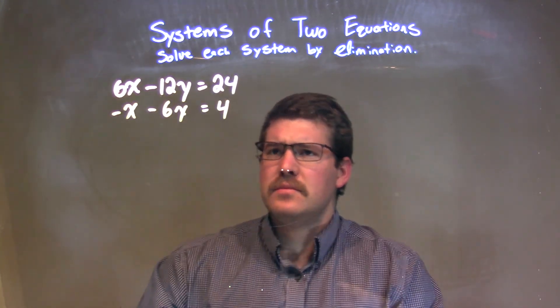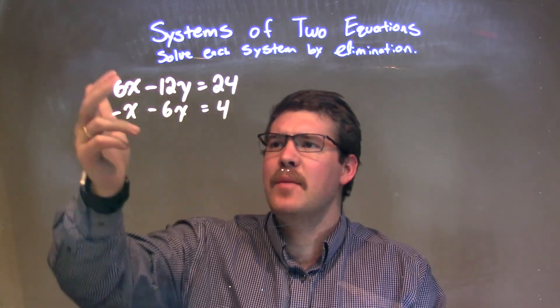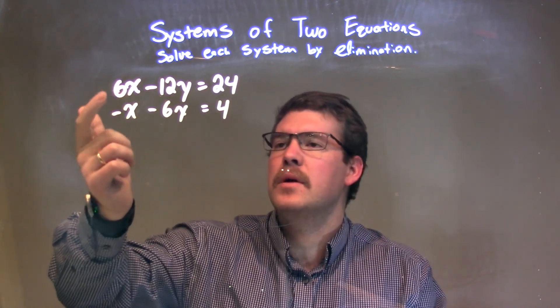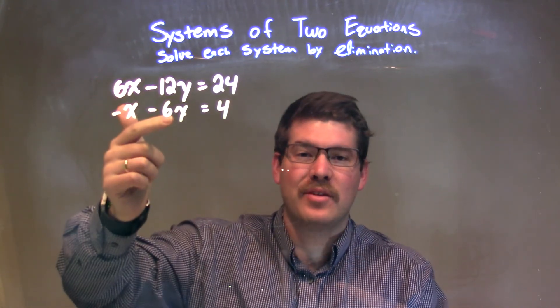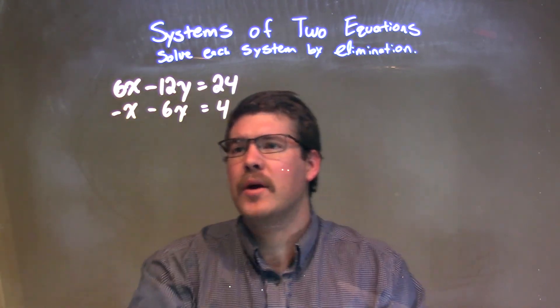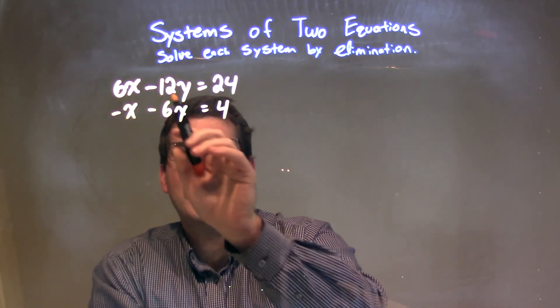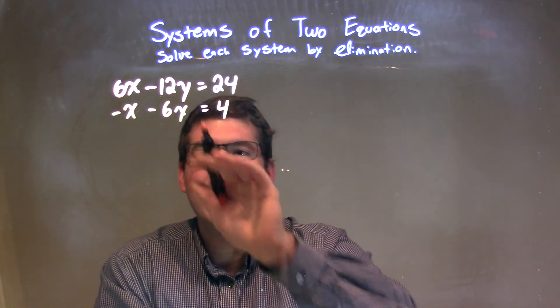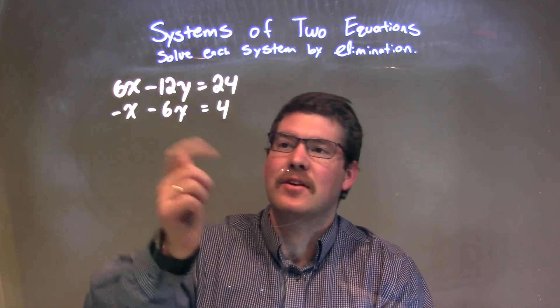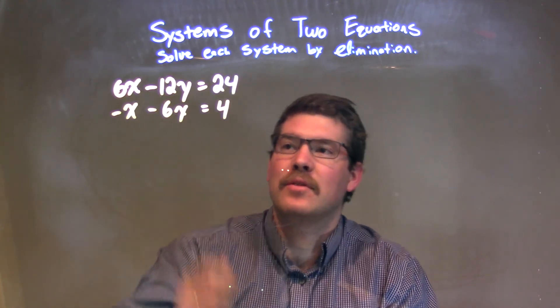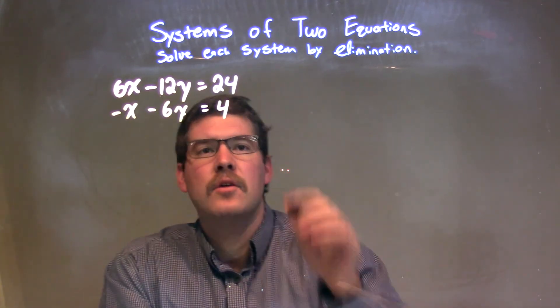What I want to do with elimination is see if I can multiply one of these equations, or both of them, to get one of the variables opposite of the other one. I'm looking at the negative 12 and the negative 6. I know if I multiply 6 by 2, I'm going to get 12, and if I multiply the negative 6 by negative 2, I'm going to get that positive 12. That's going to be opposite of the negative 12 above it.